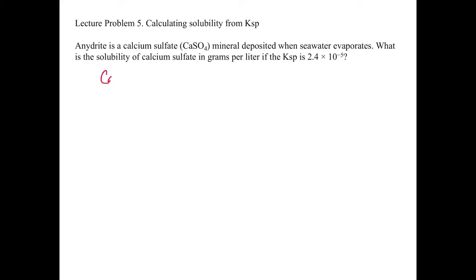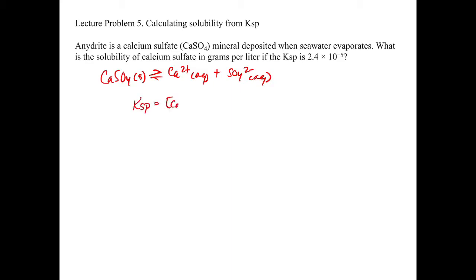Like all these problems, we're going to start by writing down our reaction. Calcium sulfate solid is in equilibrium with calcium 2+ aqueous and SO₄²⁻ aqueous. And then we can write our KSP expression, which is going to equal the concentration of calcium 2+ times the concentration of SO₄²⁻.